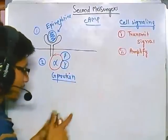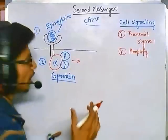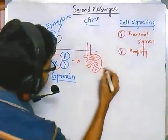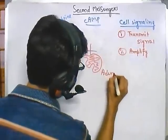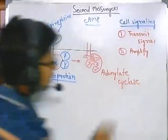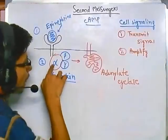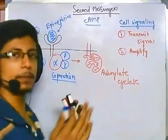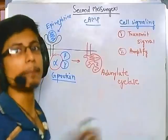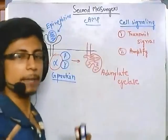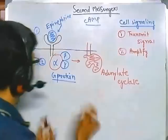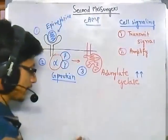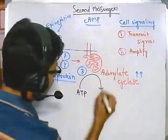The alpha subunit migrates and activates another enzyme that is embedded in the cell membrane called adenylate cyclase. So the third step is: the alpha subunit attaches to and activates adenylate cyclase. Remember, this is the relaying of the signal; as it relays, it amplifies, though significant amplification happens in the downstream process.